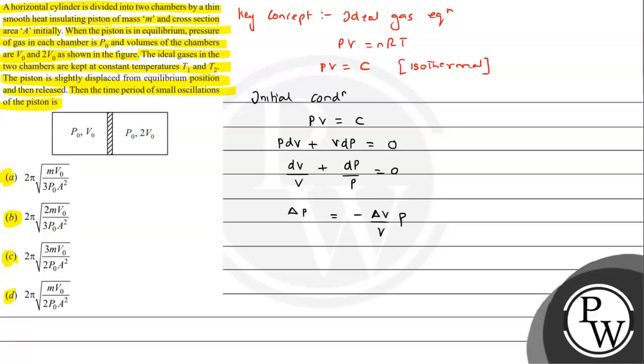From this we can say now when we displace this piston slightly, on displacement of piston, here we can see one side gas compresses and one side expands. So on displacement of piston by x, the extra force, let's suppose F1, will be equal to ΔP1 into A, pressure into area. Now ΔP from the expression, it can be written as -ΔV1/V1 into P into A. So here we can write first for the right chamber.